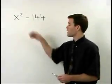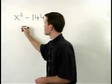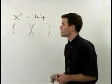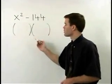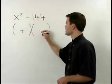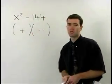So this binomial will factor as the product of two binomials. The first binomial will have a plus in the middle. The second binomial will have a minus in the middle.